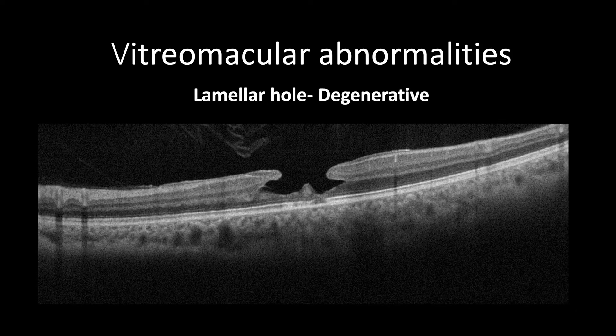The other form of lamellar hole related to traction is usually caused by the epiretinal membrane, leading to degenerative cavitation forming cleavage of the inner retina, leaving a lamellar defect similar to a top hat. The wider the inner edges of the lamellar hole, the more thinning it will be. In contrast to the schisis type, the ellipsoid zone in the degenerative type is usually disrupted, which explains the reduction of vision.